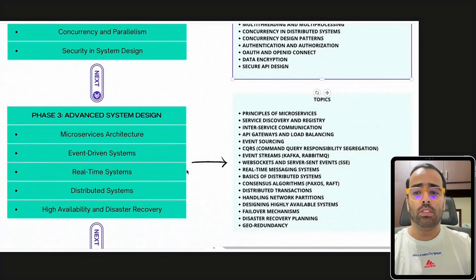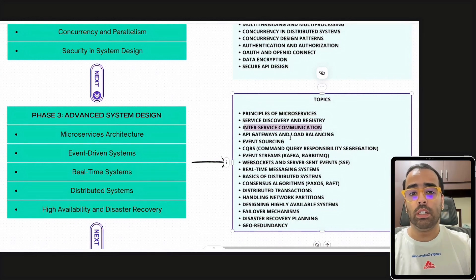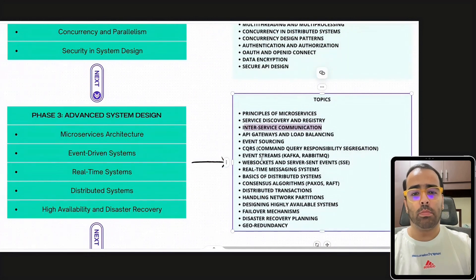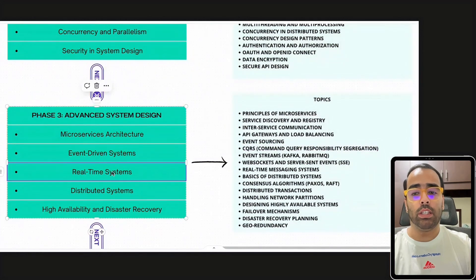Phase three is advanced system design. Here you should be aware of microservices — how service discovery works, the principles of microservices, and inter-service communication such as Eureka in Spring Boot. Event-driven systems are also very much in trend, so you should know Kafka, RabbitMQ, and the CQRS pattern and why companies use it.